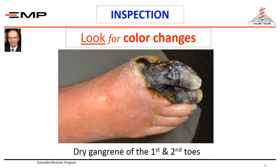So, there are colours that you will look for: pallor, reversible rubor, reversible cyanosis, and irreversible colour changes, which may be blue or black.